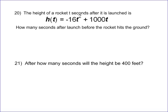There are two parts to this problem. The first is you want to find the height of a rocket t seconds after it is launched. That gives you a formula, and this formula is going to govern both of these two problems. The first thing we need to do is find out how many seconds after the launch before it hits the ground.